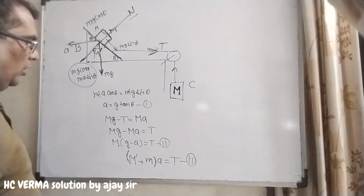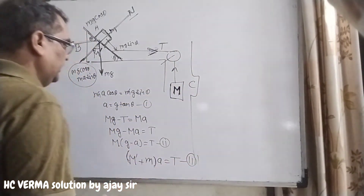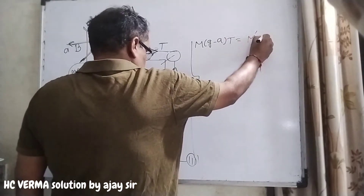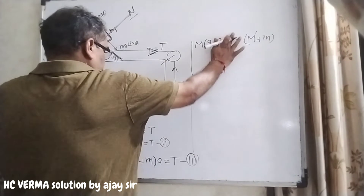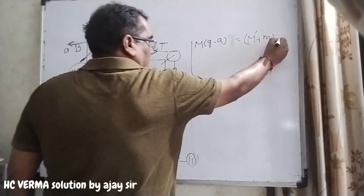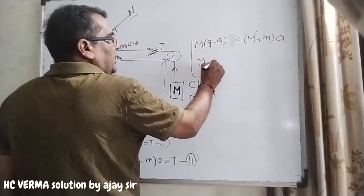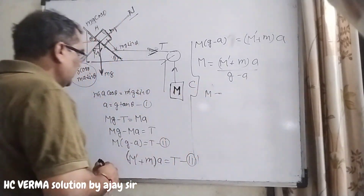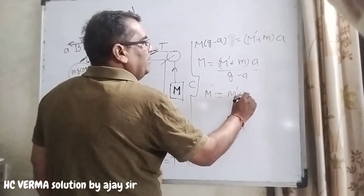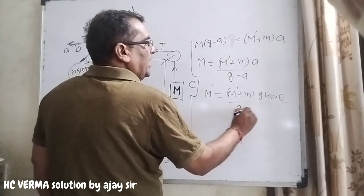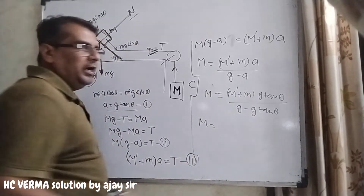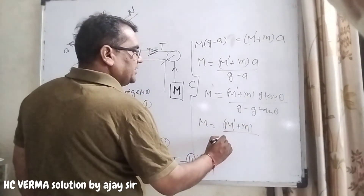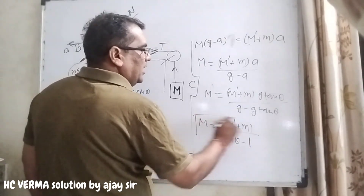Ab hum second aur third ko compare karte hain. Toh kya milega: M(g minus a) equal to (m dash + m) into a. Yahan par hume toh M chahiye: M equal to (m dash + m) into a divided by (g minus a). Ab a ki value hamare equation mein g tan theta likha hua hai, toh M equal to (m dash + m) into g tan theta upon (g minus g tan theta). Numerator aur denominator mein g se divide karo, toh M equal to (m dash + m) tan theta upon (1 minus tan theta) — yeh aapka answer hai.